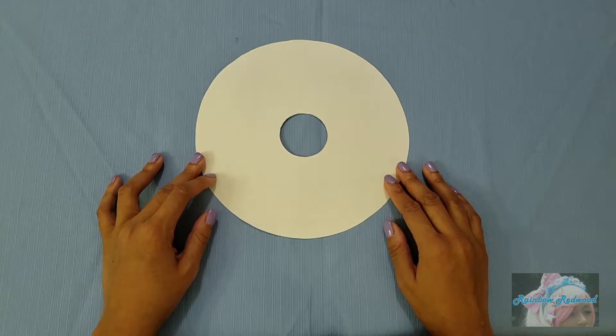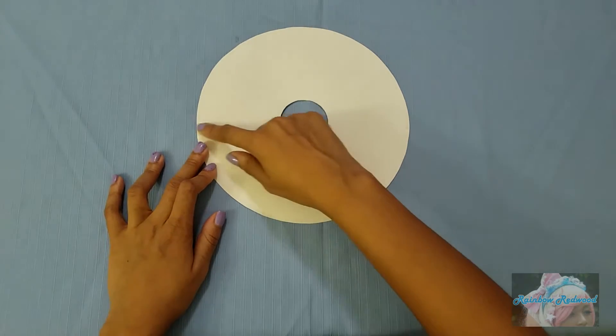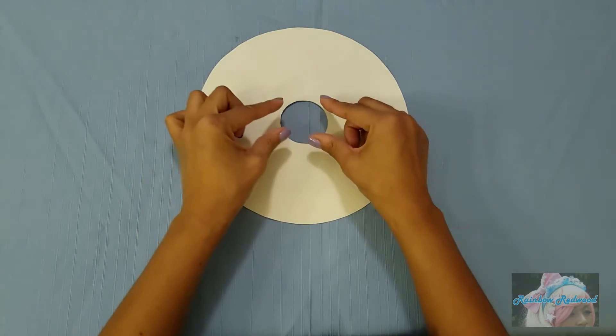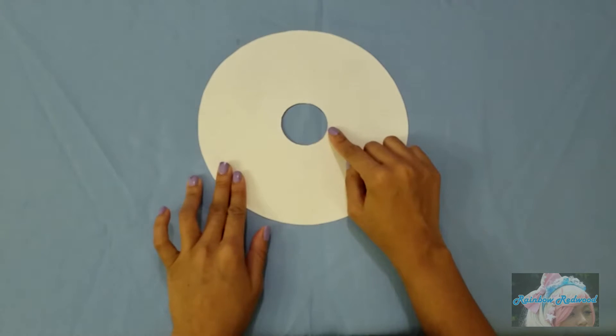For your pattern, you will cut out a circle with a diameter of 9 inches and you'll cut out another circle in the middle with a diameter of 2 inches.